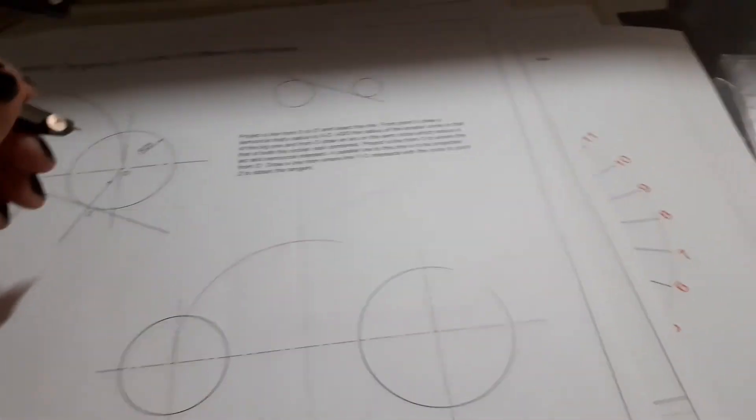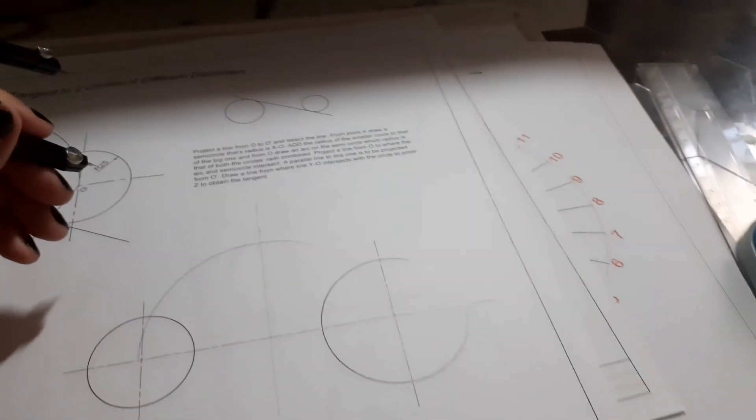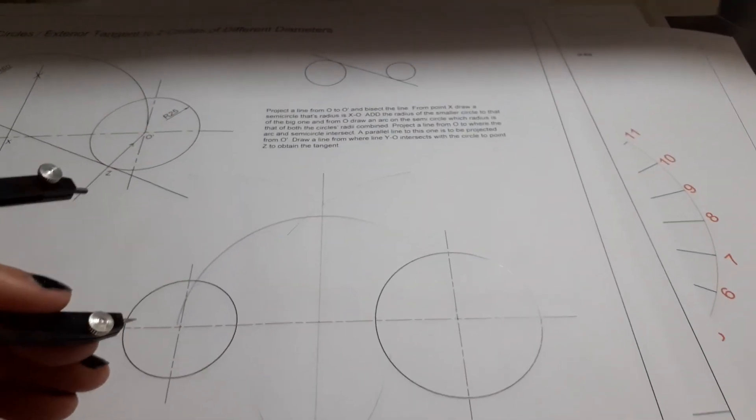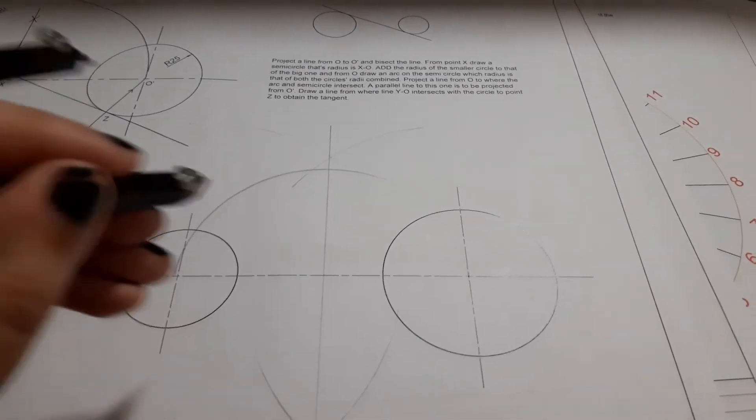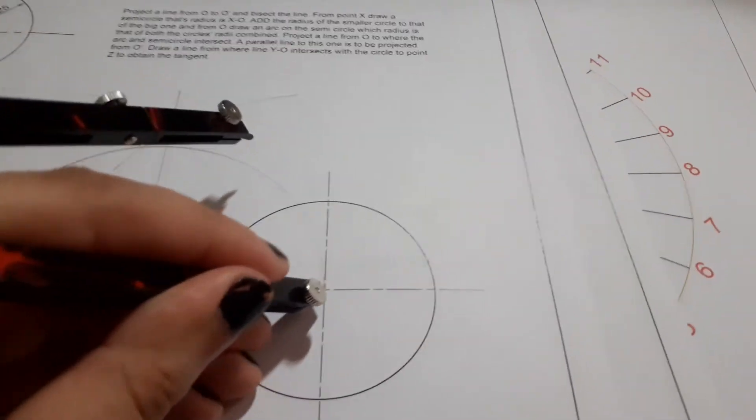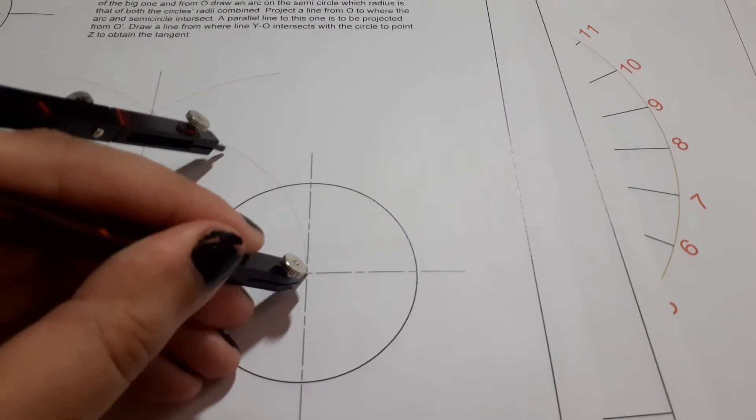Place the compass on the bigger circle - remember, always the bigger circle - and draw an arc on the semicircle.